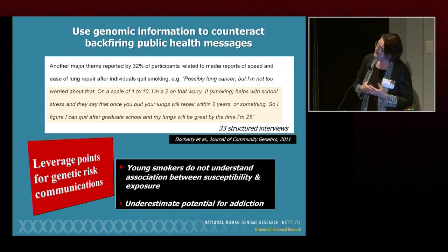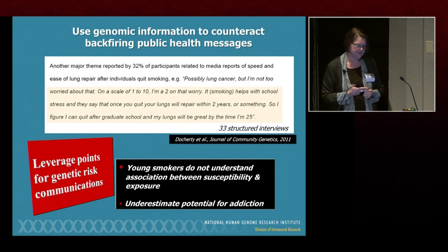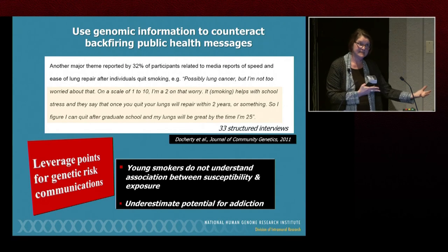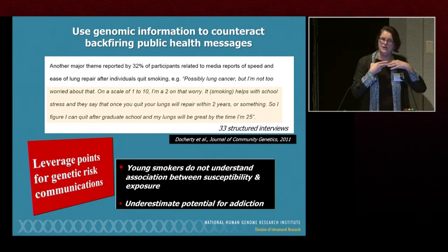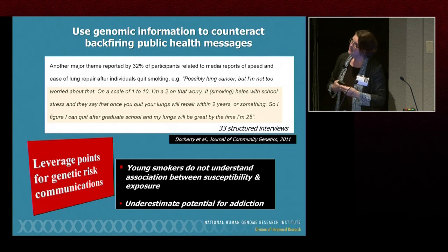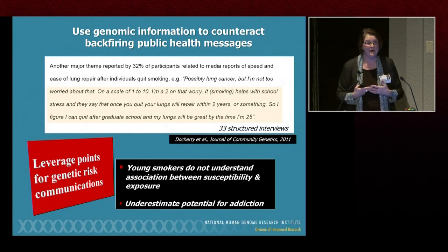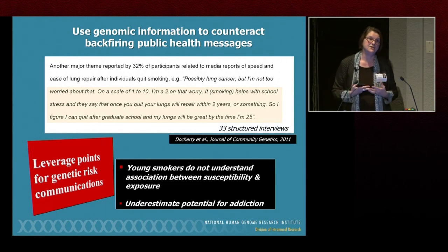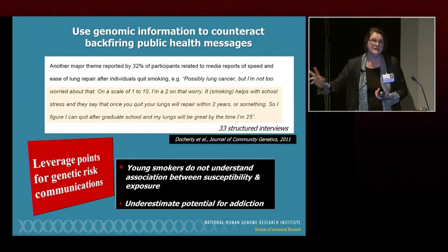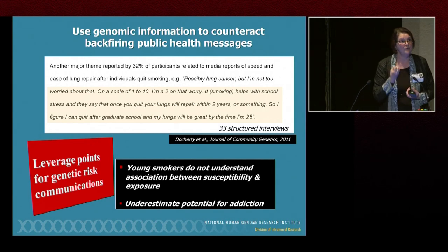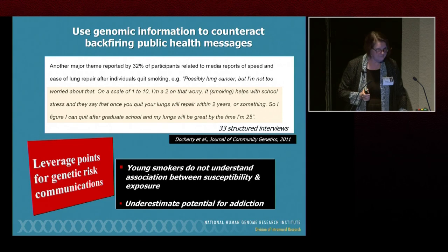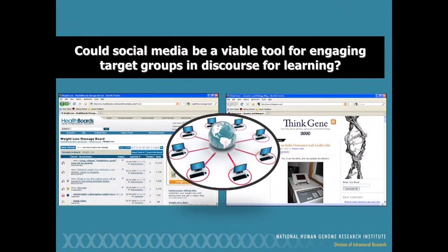Two leverage points for genetic risk communication with young smokers: first, they don't really understand that susceptible individuals need less exposure to develop illness — a gene-environment risk communication opportunity. Currently we just talk about genetic risk. Second, they underestimate the potential for addiction, and there are genetic risk variants giving insights into propensity for addiction. Perhaps rather than risk communication focused on distant health outcomes like lung cancer that happen in older ages, we should focus on things more proximal in these students' minds — using social media and other strategies, bringing translation research to those environments for risk communication refinements.